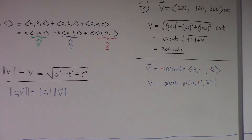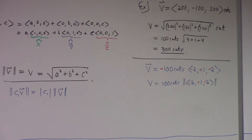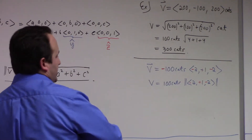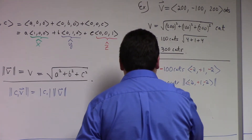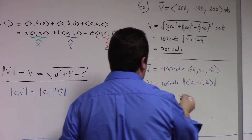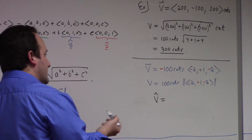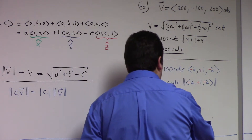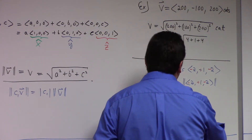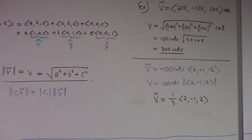Alright, so I hope you can see how you would create unit vectors from a given vector. Oh, I never found V hat, did I? What was V hat? Sorry guys, I lost track. Who distracted me? Probably me. So V hat would be 1 over 3 times the vector (2, -1, 2). What happened to the hundreds? They cancel.